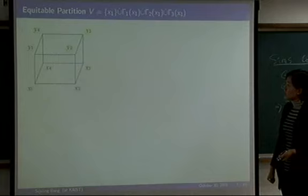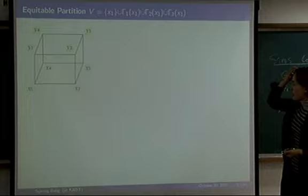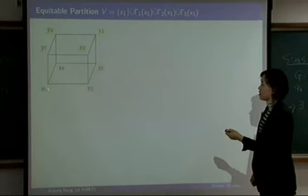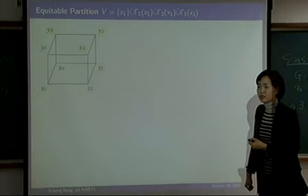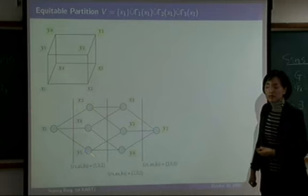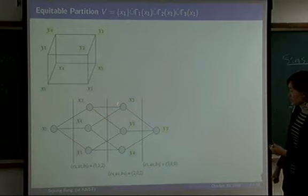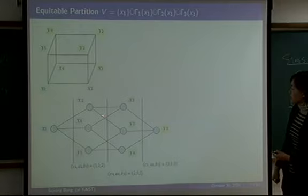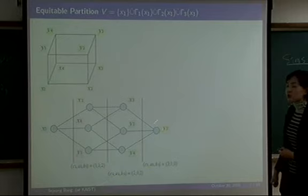Now let me introduce what distance-regular graphs are. Consider the 3-cube Q_3 as a simple example. Fix any base vertex, say x₁, and consider the distance partition with respect to x₁. The first column consists of distance-1 neighbors of x₁, the second column is the set of vertices at distance 2, and the last is the set at distance 3. This partition has a very special property: any vertex in the same column has the same number of neighbors in every direction.